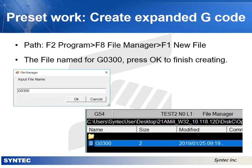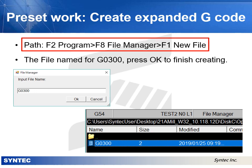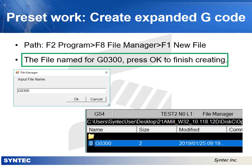The second step in the preset work is creating an expanded G-code. On the main screen of the simulator, press F2 to go to Program, F8 to File Manager, and F1 to New File. After inputting a file name, press the OK button. You can see this file on the window of the file manager.